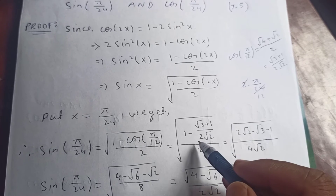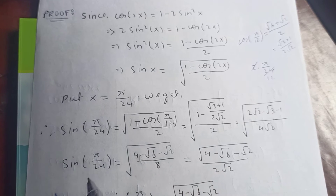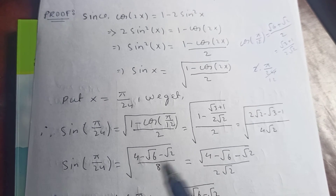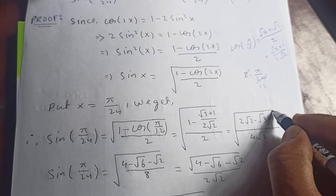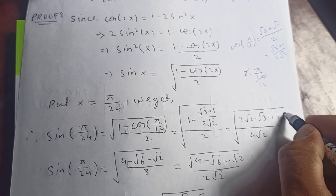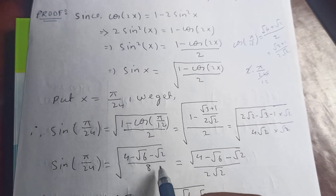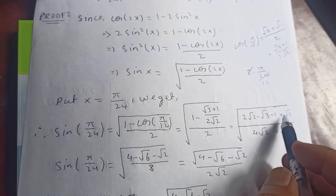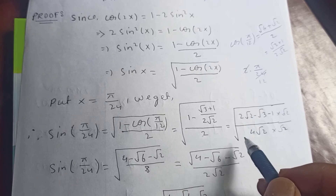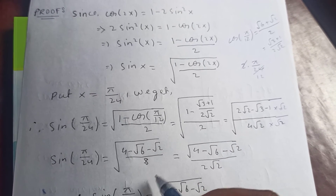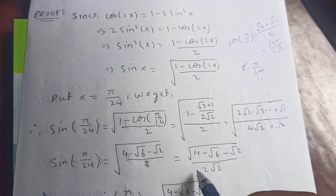Simplifying further: we have (2√2 minus √3 minus 1) divided by 4√2. To simplify, we multiply both numerator and denominator by √2. This gives us (4 minus √6 minus √2) over 8. Since 8 is nothing but 2 times 4, and further simplifying, we get (4 minus √6 minus √2) over (2√2).